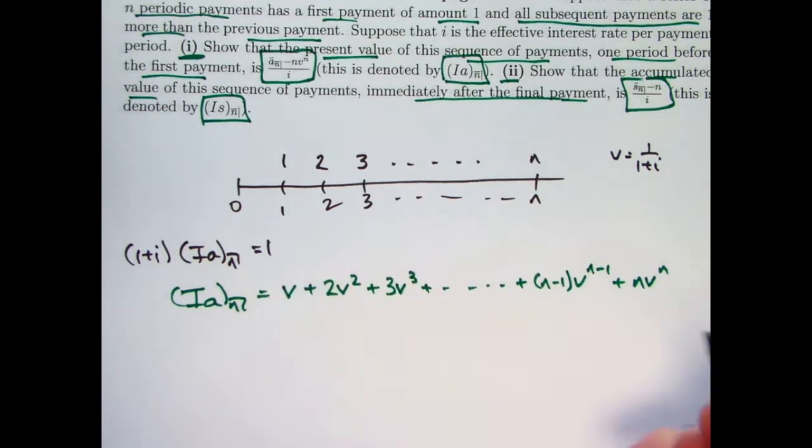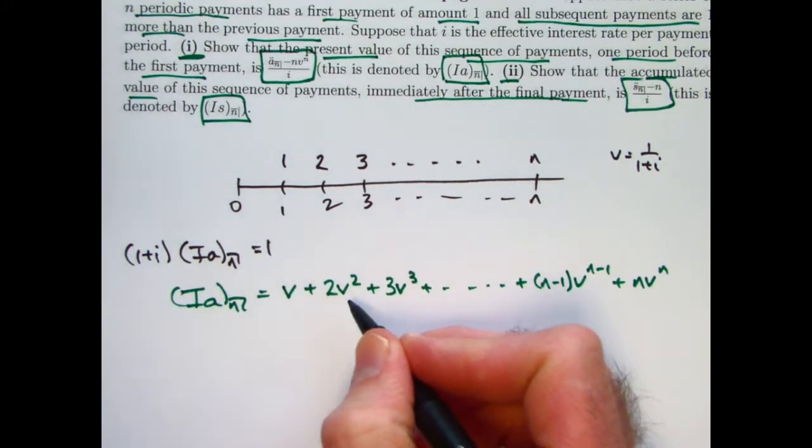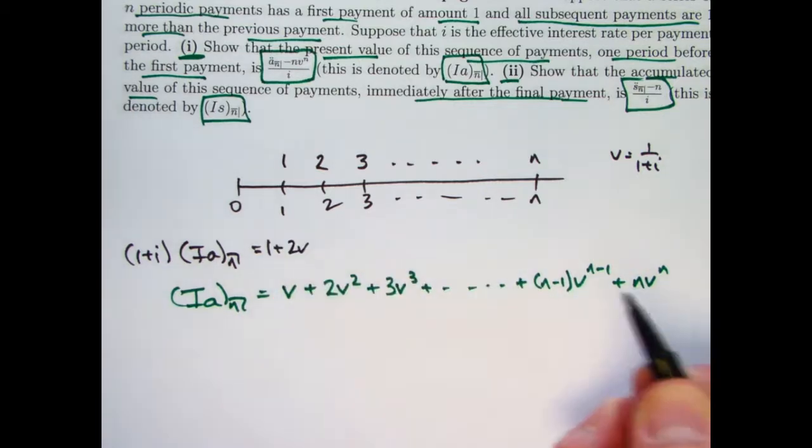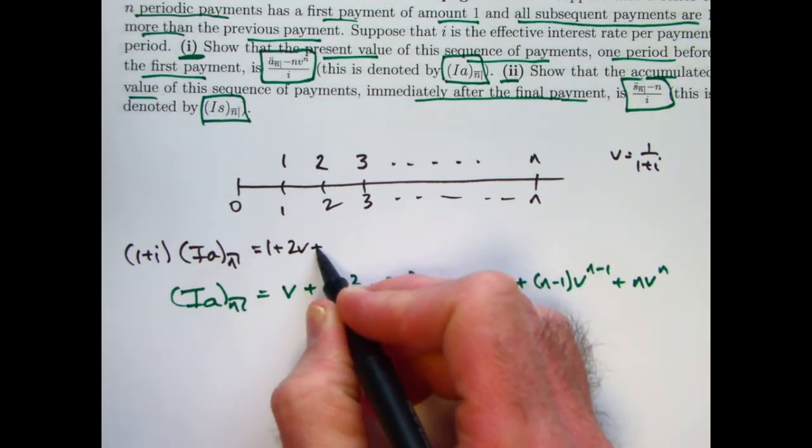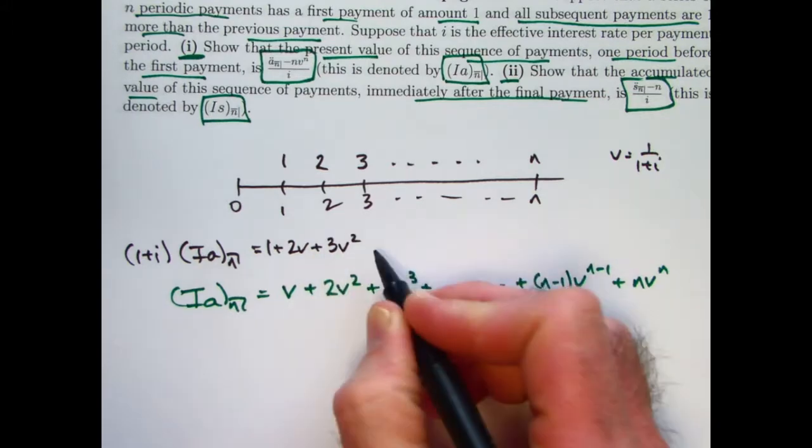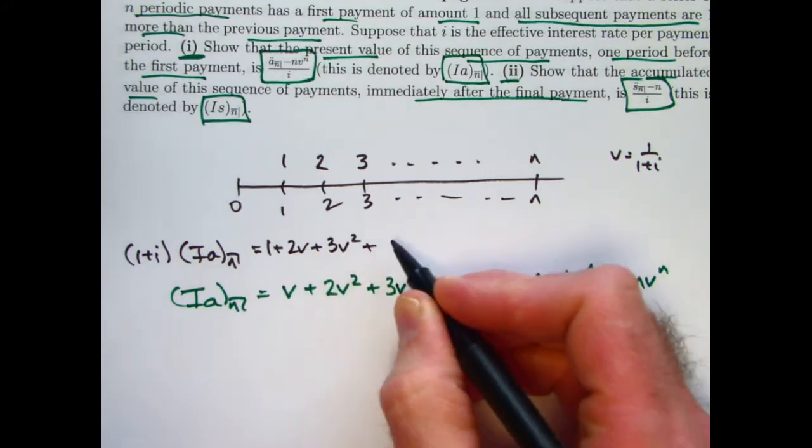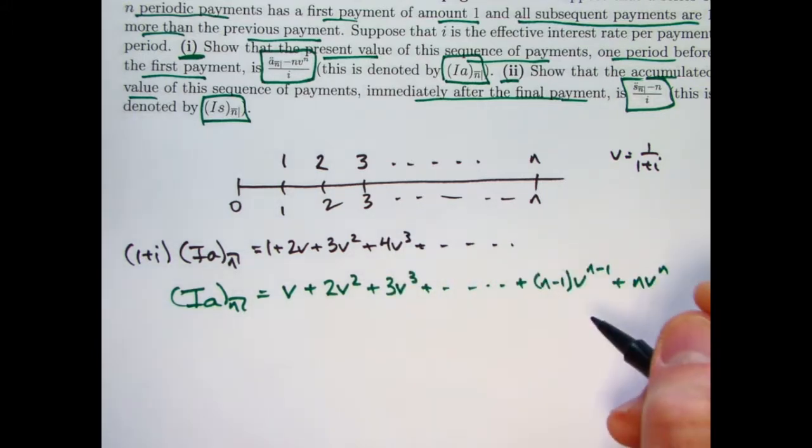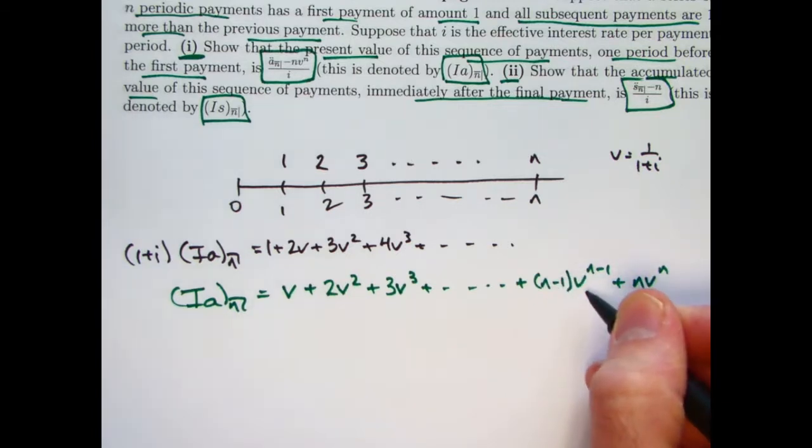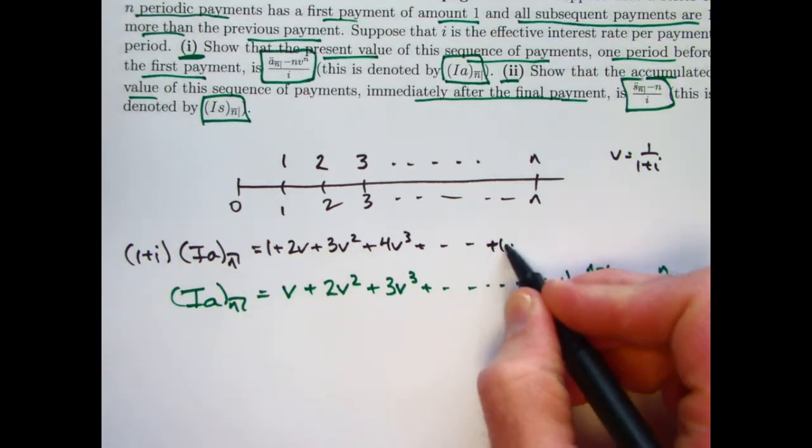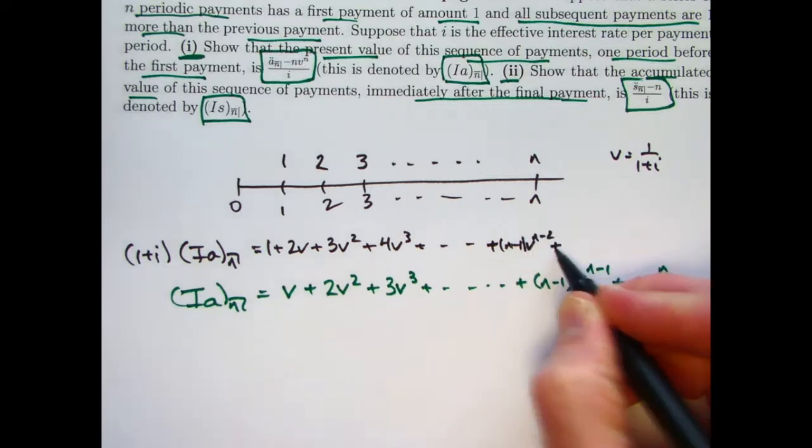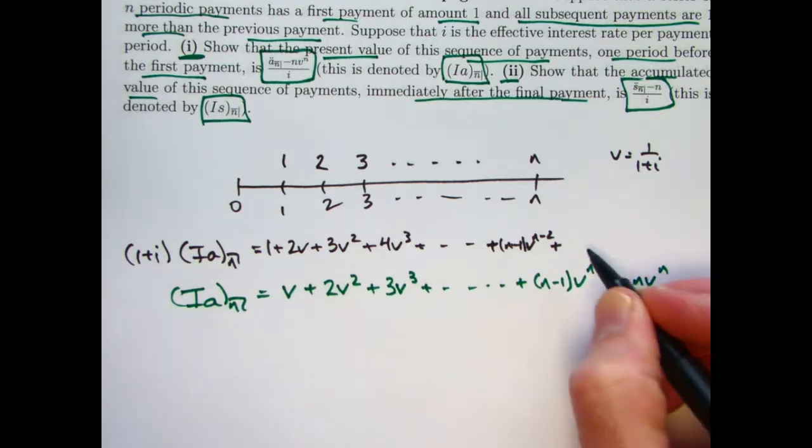What happens when you multiply v by 1 plus i? Well, you get 1. What happens when you multiply 2v squared by 1 plus i? You get 2v. When you multiply 3v cubed by 1 plus i, you get 3v squared, etc. Your next term would be 4v cubed. When you multiply n minus 1 times v to the n minus 1 by 1 plus i, you'll get plus n minus 1 times v to the n minus 2. And finally, when you multiply nv to the n by 1 plus i, you get nv to the n minus 1.